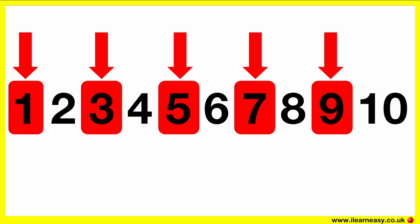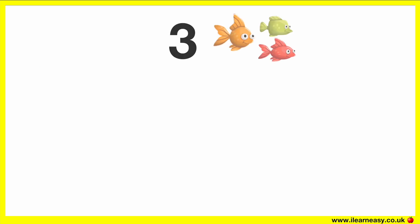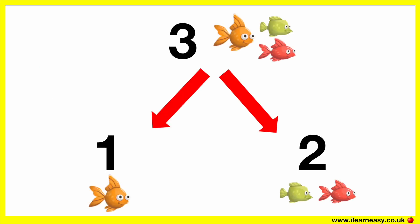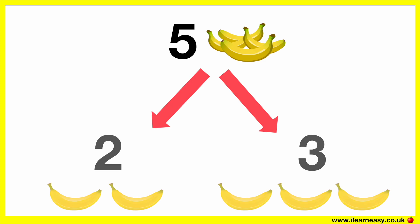The odd numbers are 1, 3, 5, 7 and 9. An odd number can't be split into two equal parts. For example, the odd number 3 can be split into 1 and 2 — these are not equal parts. The odd number 5 can be split into 2 and 3 — these are not equal parts.